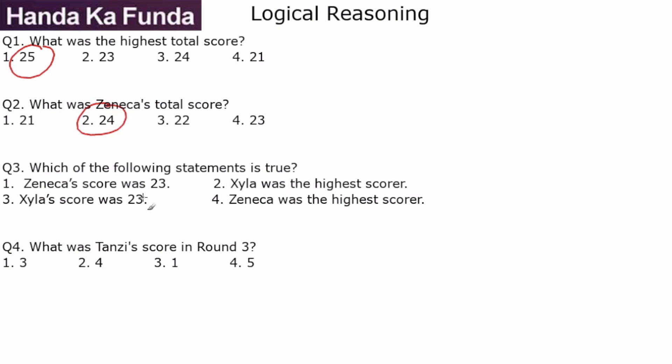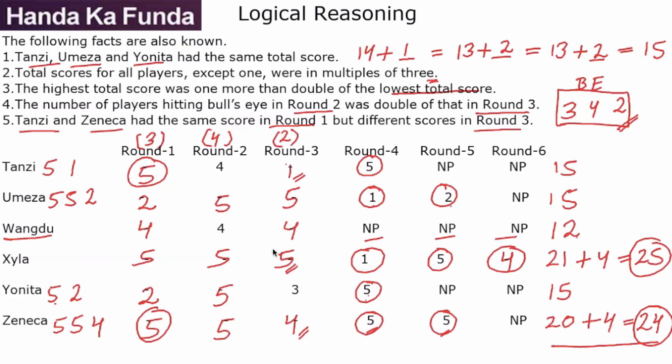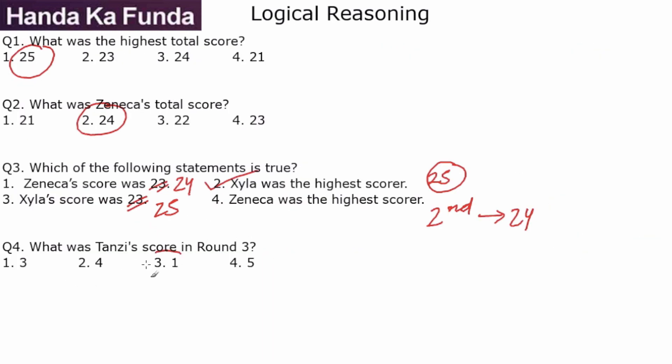Which of the following is true? Zeneca's score was 23. No, it was 24. Xyla was the highest scorer. Yes, Xyla was the highest scorer with a score of 25. And then the others are wrong. Xyla's score was 23. No, Xyla was at 25. Zeneca was the highest scorer. No, Zeneca was the second highest scorer at a score of 24. And what was Tanzi's score in round 3? Let's check. Tanzi in round 3 had a score of 1.